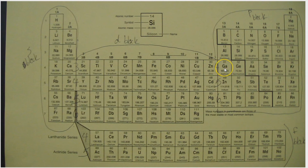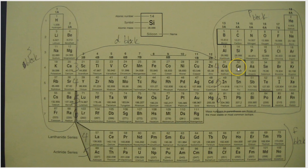Then we cross over to gallium — we're back in the P block, and now we're back in the fourth energy level. So gallium is 4p1, then 4p2, 4p3, and so on and so forth through krypton, which is 4p6.